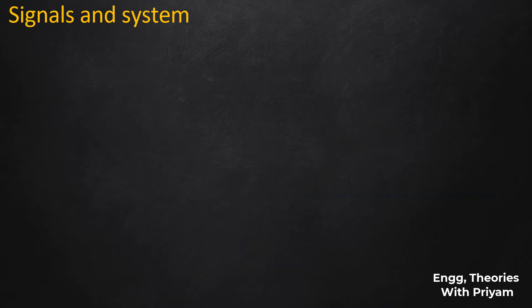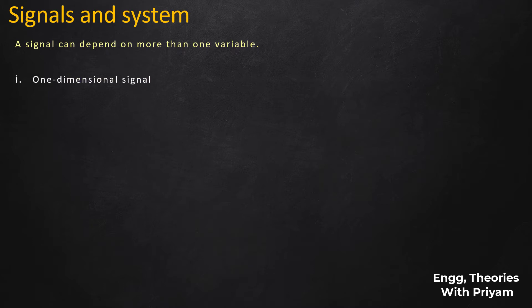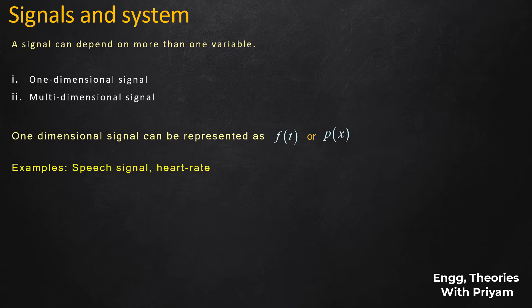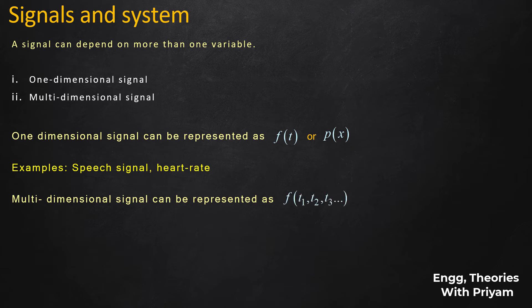A signal can depend on one or more than one independent variable, and based on this dependence, signals are of two types. A signal which depends on one independent variable is known as a single variable or one-dimensional signal, represented as f(t) or p(x). Examples are speech signal and heart rate. A signal which depends on more than one variable is known as a multi-variable or multi-dimensional signal, represented as f(t1, t2) or p(x1, x2). An example of a two-dimensional signal is a monochromatic picture.